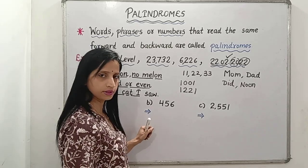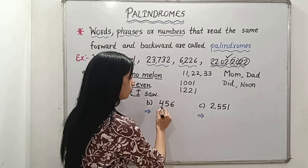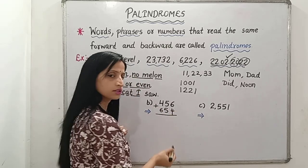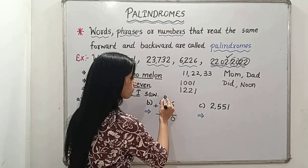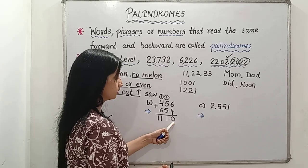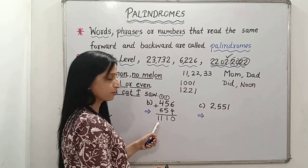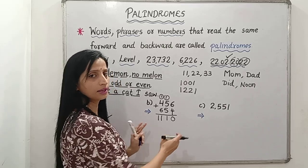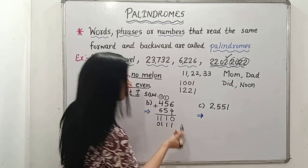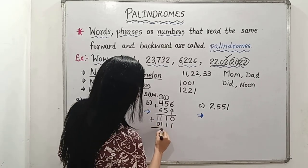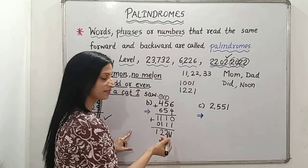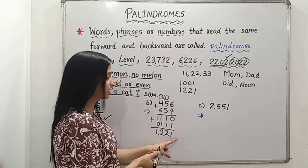Now the second example: the given number is 456. The reverse is 654. Adding them: 6 plus 4 is 10, 5 plus 5 is 10, so we get 1110. But 1110 is not a palindromic number, so we repeat the steps. The reverse of 1110 is 0111. Adding: 0 plus 1 is 1, 1 plus 1 is 2, 1 plus 1 is 2, 1 plus 0 is 1. The answer is 1221, which is now a palindromic number.